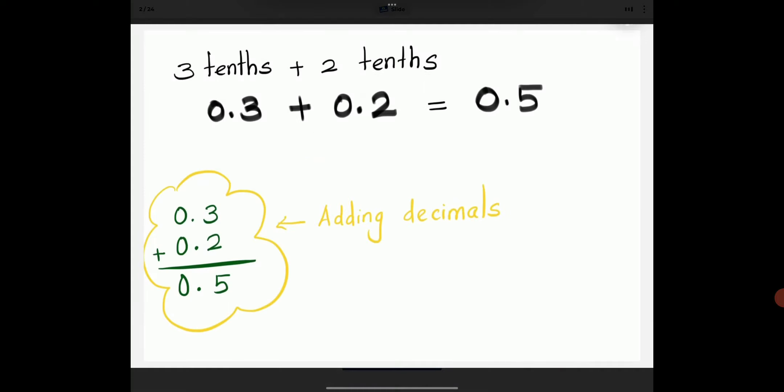Adding decimals. 3 tenths plus 2 tenths is 5 tenths. 0.3 plus 0.2 is equal to 0.5.